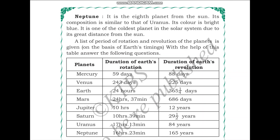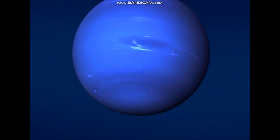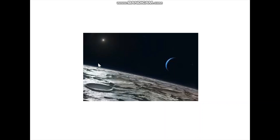Neptune is the eighth planet from the sun. Its composition is similar to that of Uranus and its color is bright blue. It is one of the coldest planets in the solar system due to its great distance from the sun. From Neptune, the sun looks very small because it is so far away — this is also why Neptune is very cold.